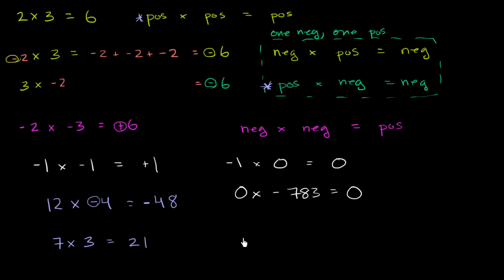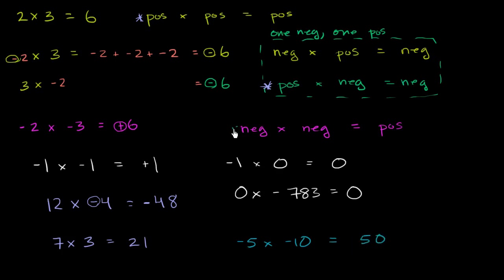If I were to say negative 5 times negative 10 — well, once again, negative times a negative, the negatives cancel out. You're just left with a positive product. So it's going to be 5 times 10, which is 50. The negatives cancel out, and your product is going to be positive.